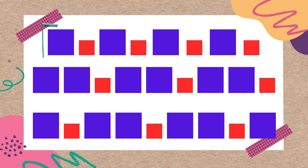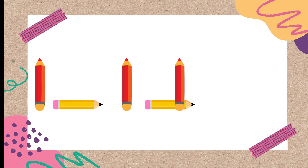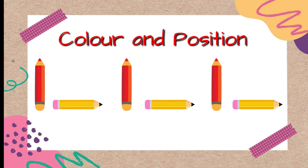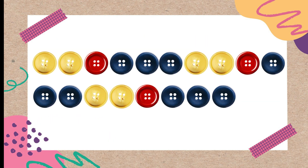Here you can see the changing attributes are the same, but the core pattern is different in each one. Now let's identify which two attributes are changing and identify the core pattern. Yes, this is color and position — color and position are changing here. Color: red and yellow; and position: standing position.